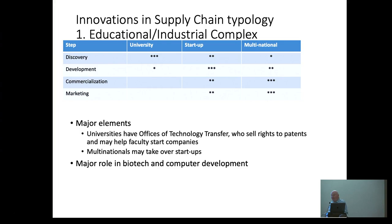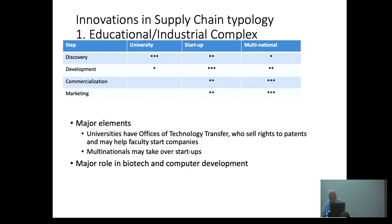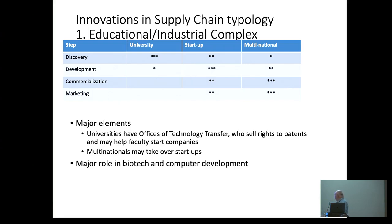Universities now have offices of technology transfer and a lot of professors become entrepreneurs. I know that 20 years ago, every time a professor started a company we had demonstrations at Berkeley. Now Berkeley is basically the university that mostly has businessmen who also teach. Rauser is not an exception — he's becoming the rule. The same is true even in Midwestern universities. This is changing, though not all over the world.